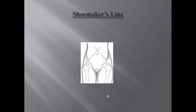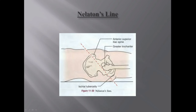Then there is another line known as Shoemaker's line. It traverses the tip of the greater trochanter and crosses the anterior superior iliac spine and moves beyond. The Shoemaker's lines of both sides will intersect either at the umbilicus or just above the umbilicus in normal patients. In case of an upward displacement of the head and the trochanter, the intersection point will come just below the umbilicus instead.